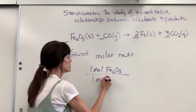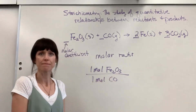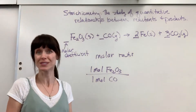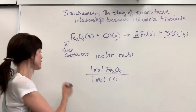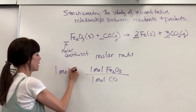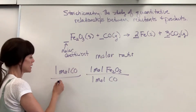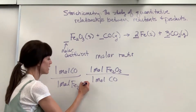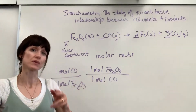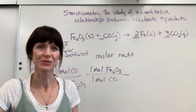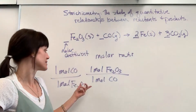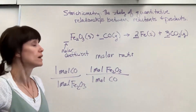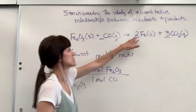The reciprocal of this is also a true statement: if I have one mole of carbon monoxide, it will react with one mole of iron(III) oxide. So the reciprocals are also true. The key to this is going to be watching your units. Let's go from reactants to products — there are several combinations, and I can pick any of these because those ratios are always going to be constant.